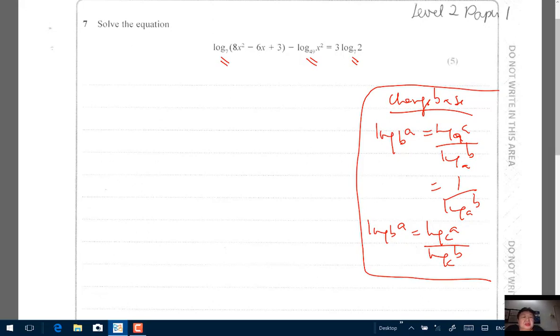So this log to base 7, that's not a problem. We can keep it. So log of 8x squared minus 6x plus 3 to base 7. But this log of base to base 49, now that one we want to change. So x squared to base 7 over log 49. 49 is same as 7 squared. Remember 49 is 7 squared to base 7. So I did skip one line here, but you can replay this and watch this again.